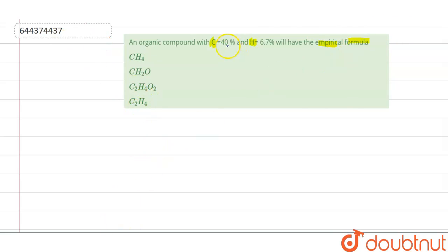Now here 46.7% only is there but we know it should be 100% and oxygen is given there. To calculate oxygen is very easy. Add this and minus by 100. So you get oxygen's percentage that is 53.3%.